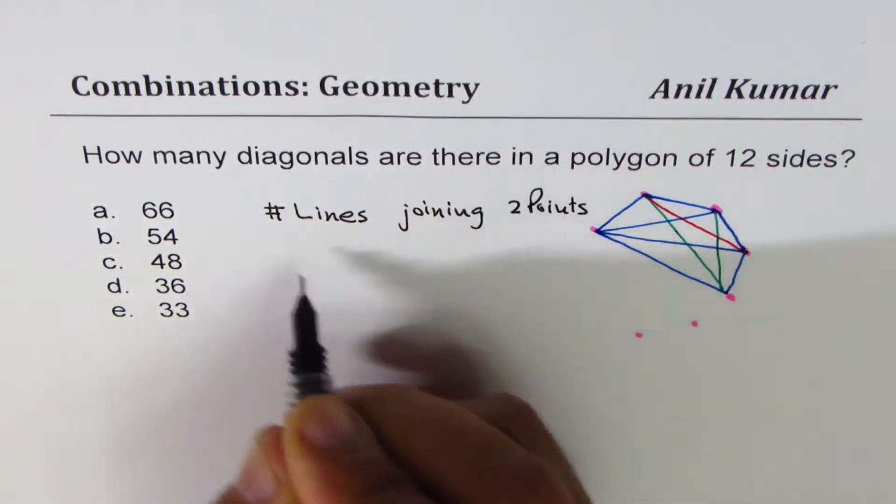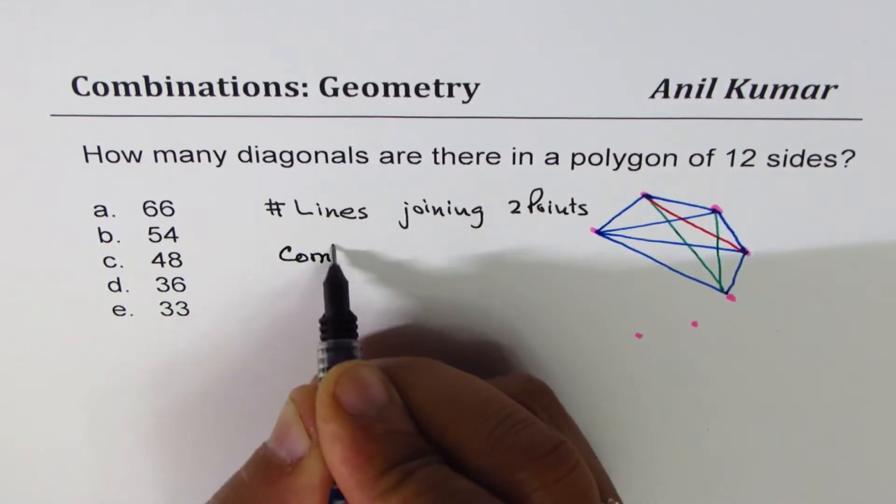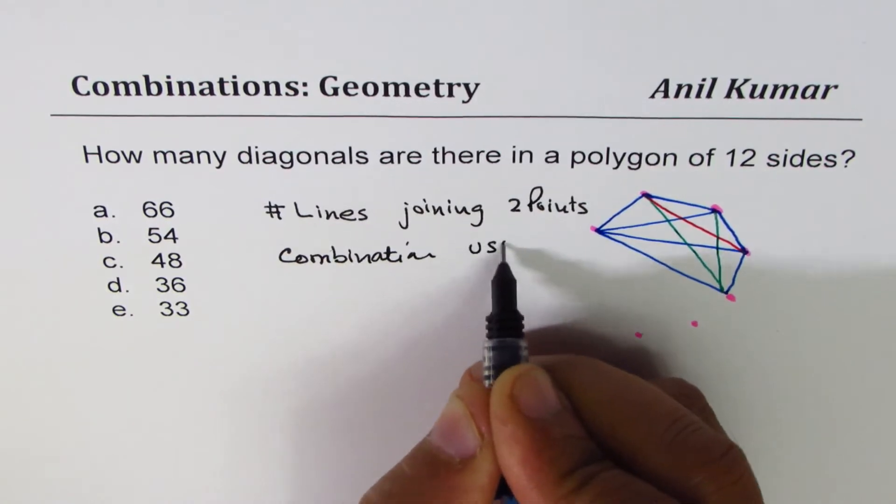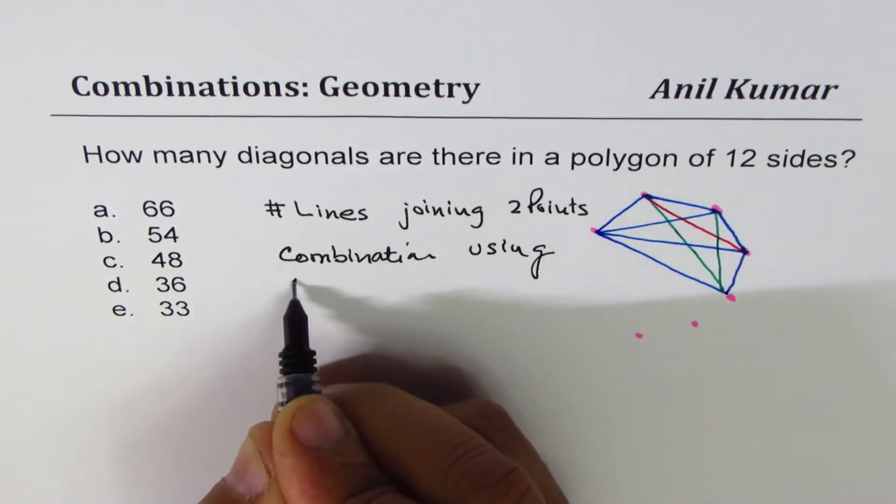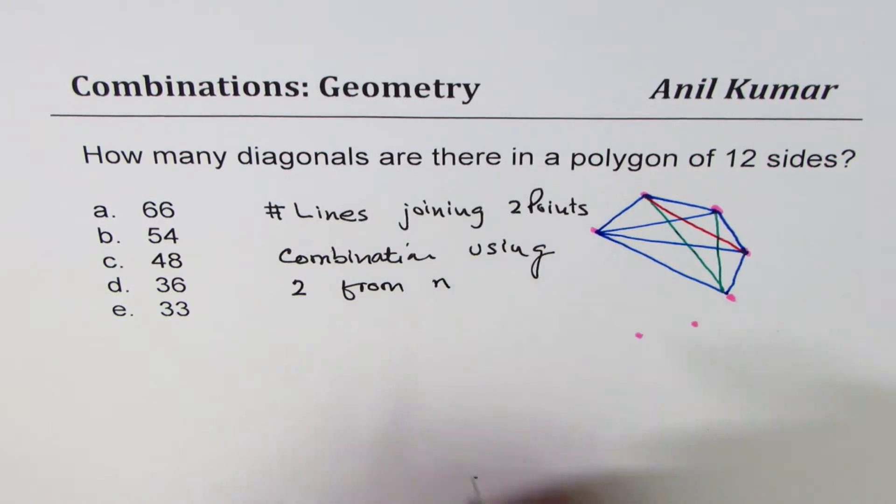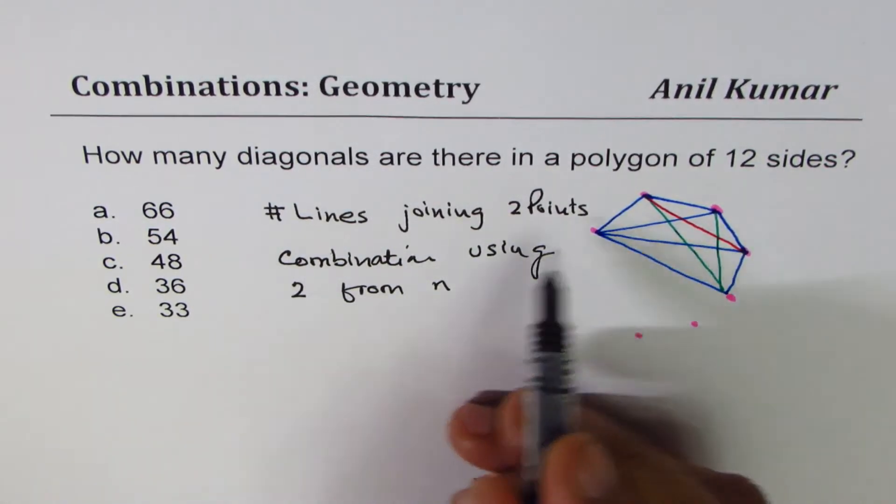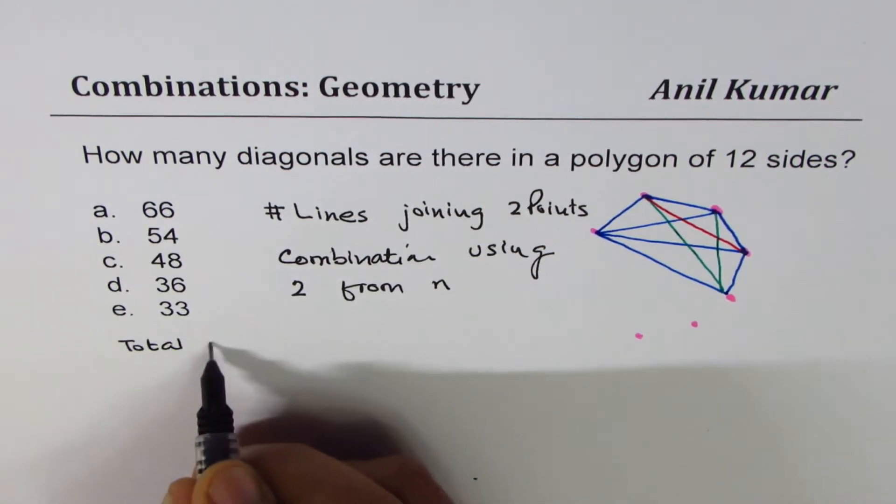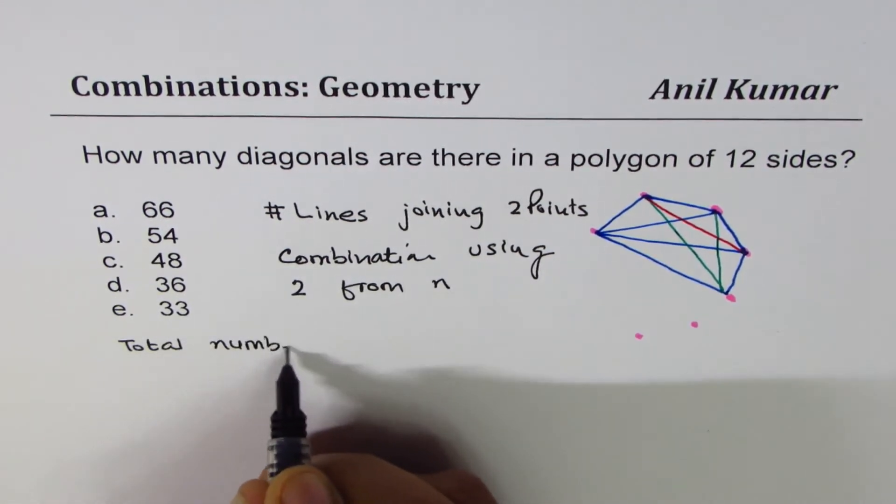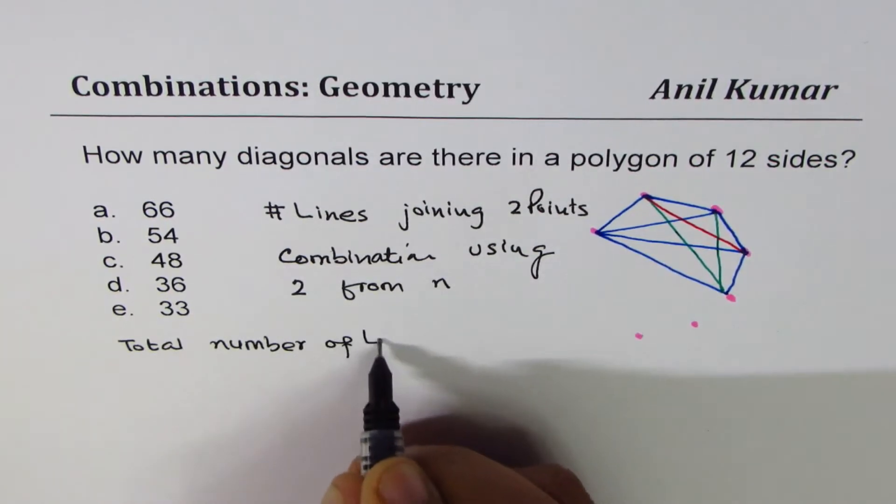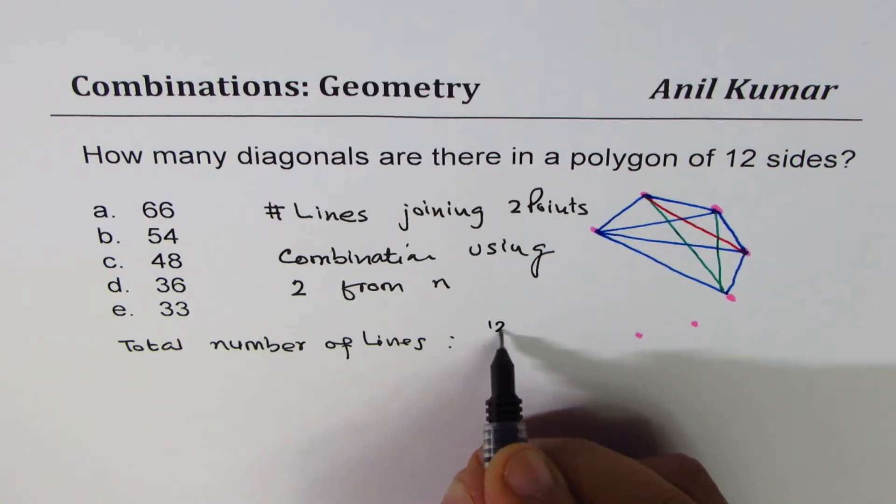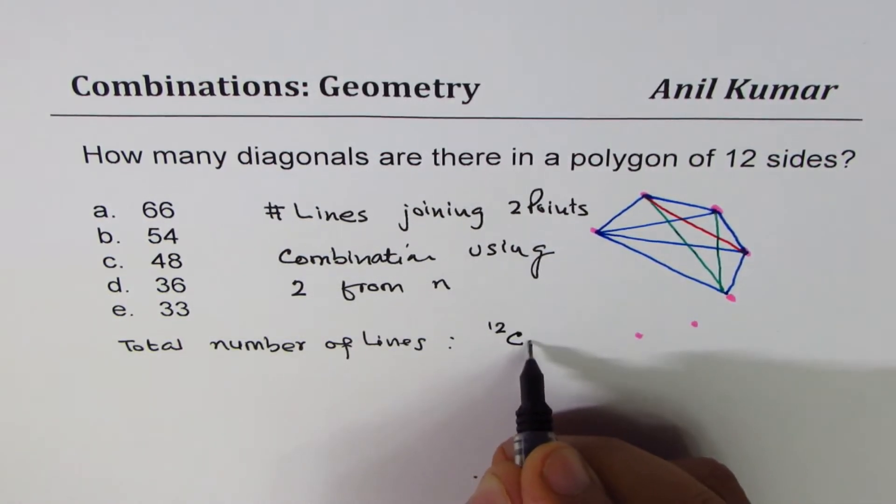That is combination, right? So that is combination using 2 from n. That is what the result is, and that gives you total combination of lines. We write here total number of lines. Since we have 12 points, we'll straight get to the question: 12C2. You understood the concept, right? 12C2.